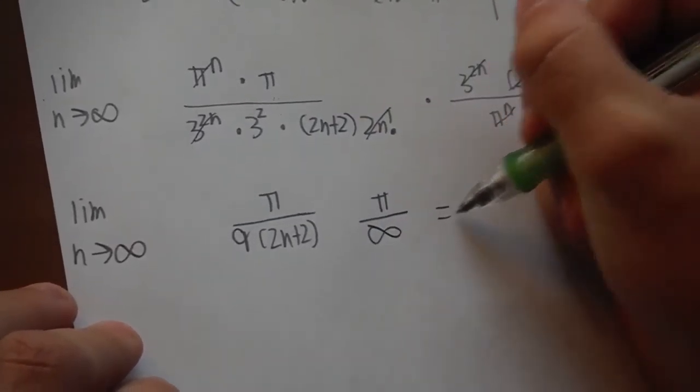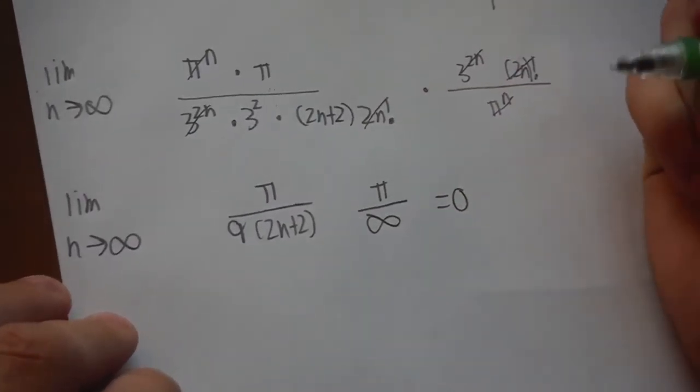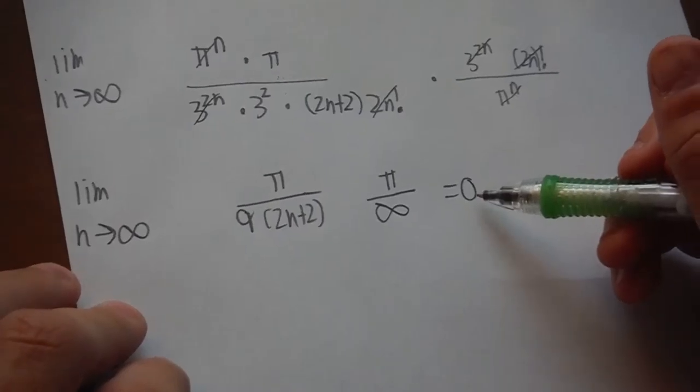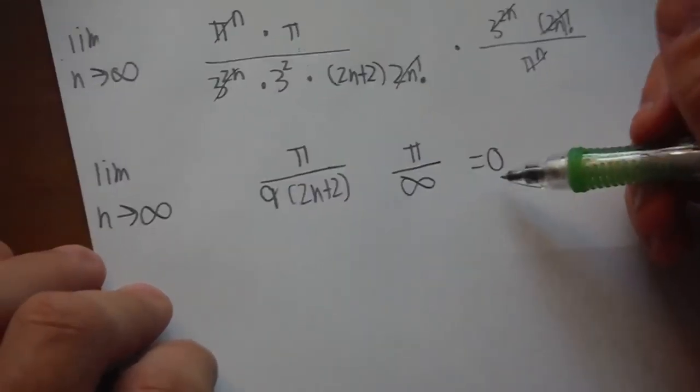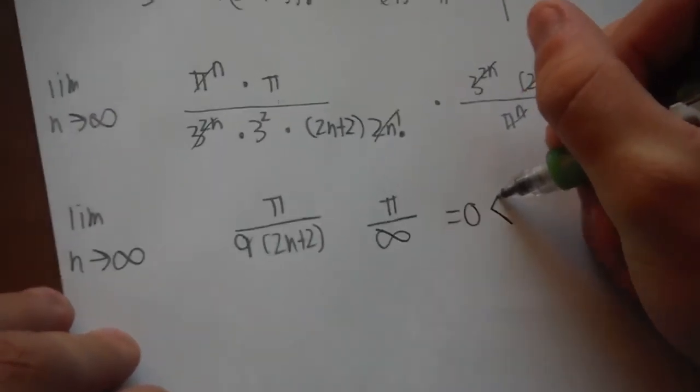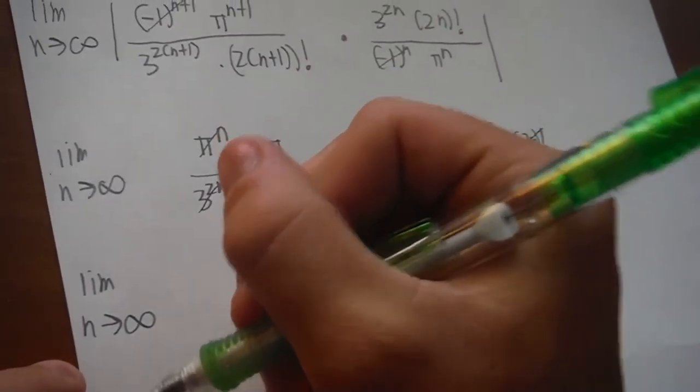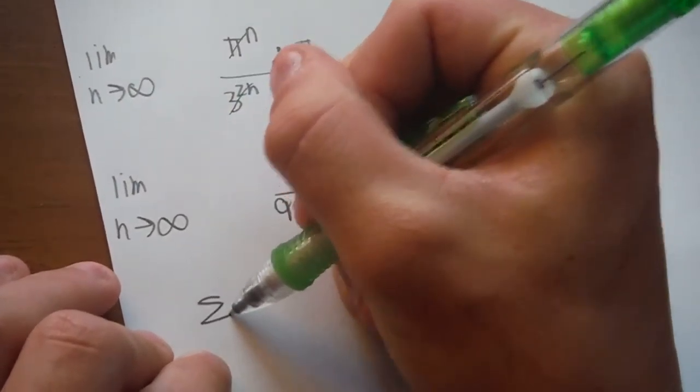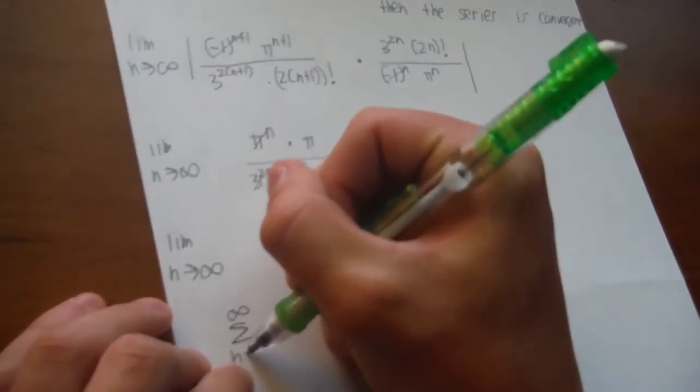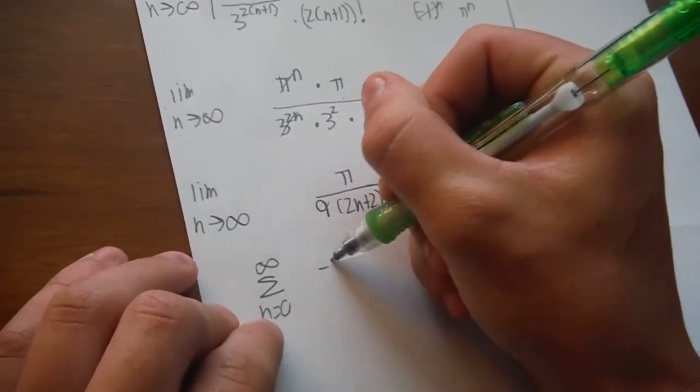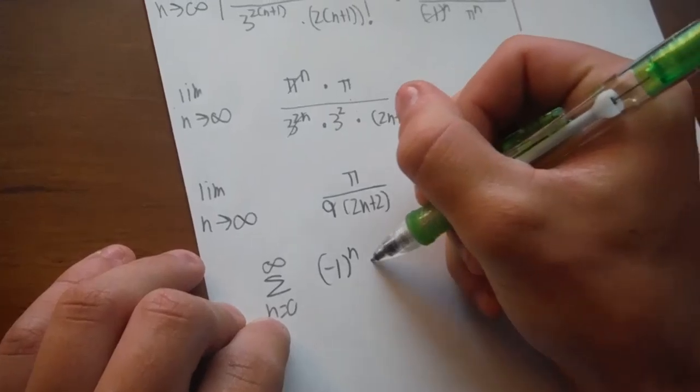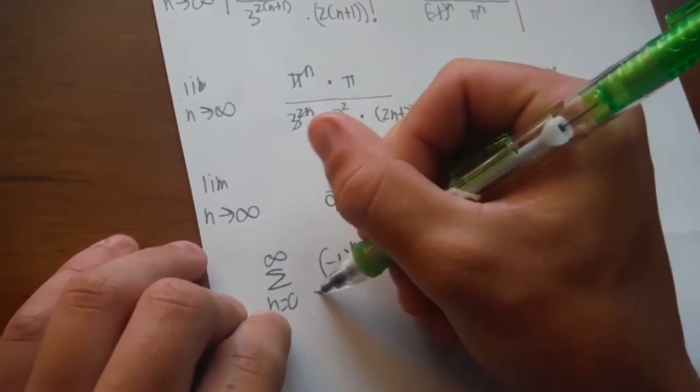So, plugging in infinity, you're going to get pi over infinity, right, because this 2n plus 2 is going to be infinity. Which is equal to 0, so the limit is 0, of this whole thing is 0, which is less than 1.